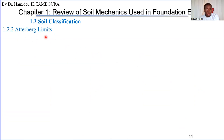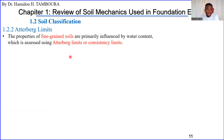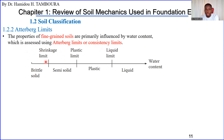For fine-grained soils — silt and clay — the primary influence is water content. For this type of soil, the Atterberg limits, also called consistency limits, are used to classify them. The liquid limit is the border between the liquid state and the plastic state of soil. The plastic limit is the border between the semi-solid and plastic state.